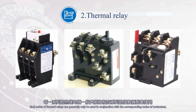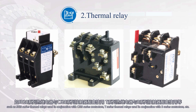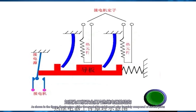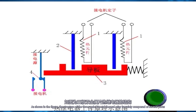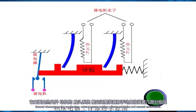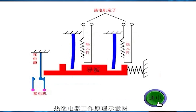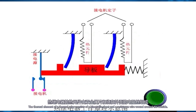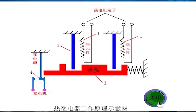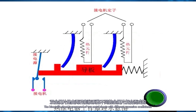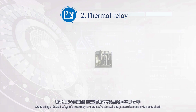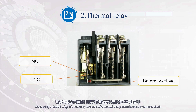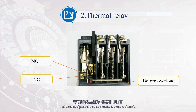Each series of thermal relays can generally only be used in conjunction with the corresponding series of contactors, such as JR20 series thermal relays used with CJ20 series contactors, and T series thermal relays used with B series contactors. The structure of the three-pole bimetallic relay is mainly composed of a thermal element, moving mechanism, contact system, setting adjustment device, and manual reset device. When using a thermal relay, the thermal components must be connected in series in the main circuit and the normally closed contacts in series in the control circuit.